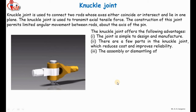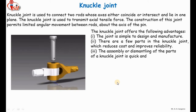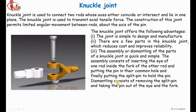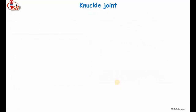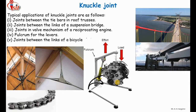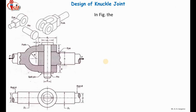The knuckle joint is mostly preferred in regions where axial tensile force is transmitted. Its applications include joints between tie rods and tie bars in roof trusses, suspension bridges, as a fulcrum for levers, and also between the joints of links in a bicycle chain.